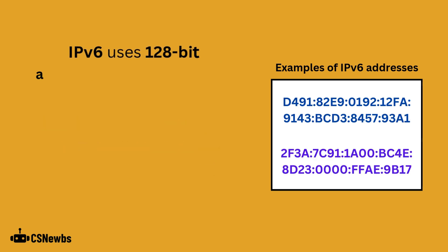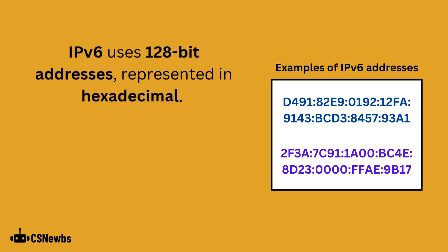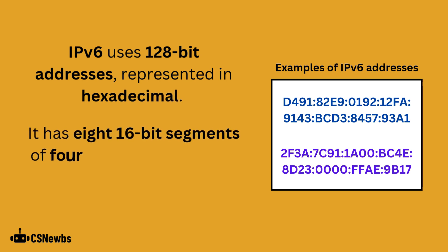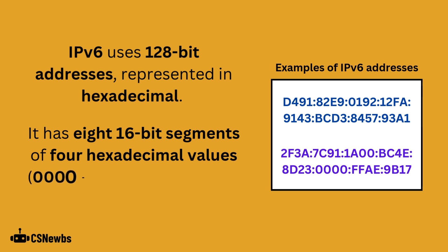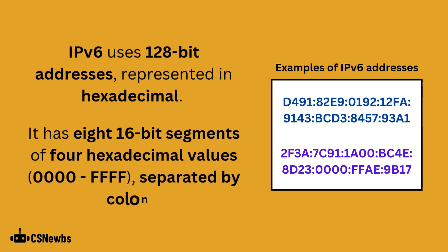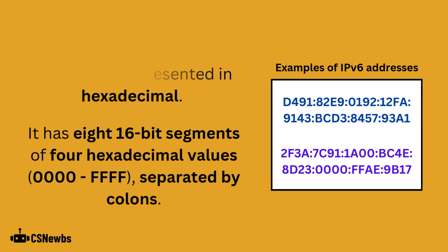IP version 6 uses 128-bit addresses, represented in hexadecimal. It has eight 16-bit segments of four hexadecimal values, from 0000 to FFFF, separated by colons.